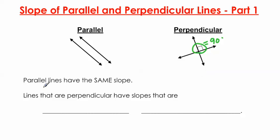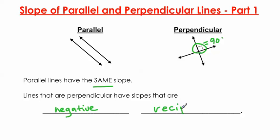Parallel lines have the same slope — we'll talk about that in a moment. But lines that are perpendicular have slopes that are negative reciprocals. You might be familiar with the word reciprocal, but not the phrase negative reciprocals. So to recap: parallel lines have the same slope, whereas lines that are perpendicular have slopes that are negative reciprocals.